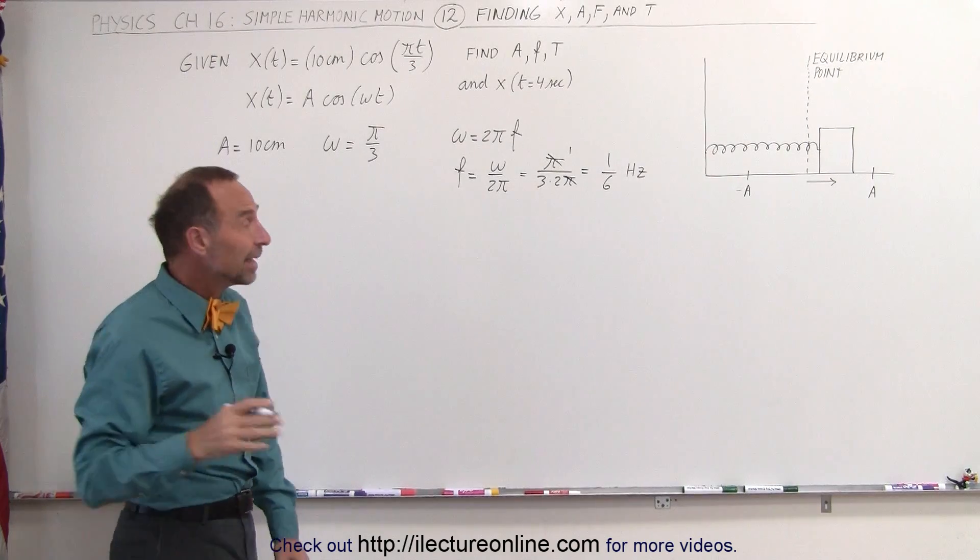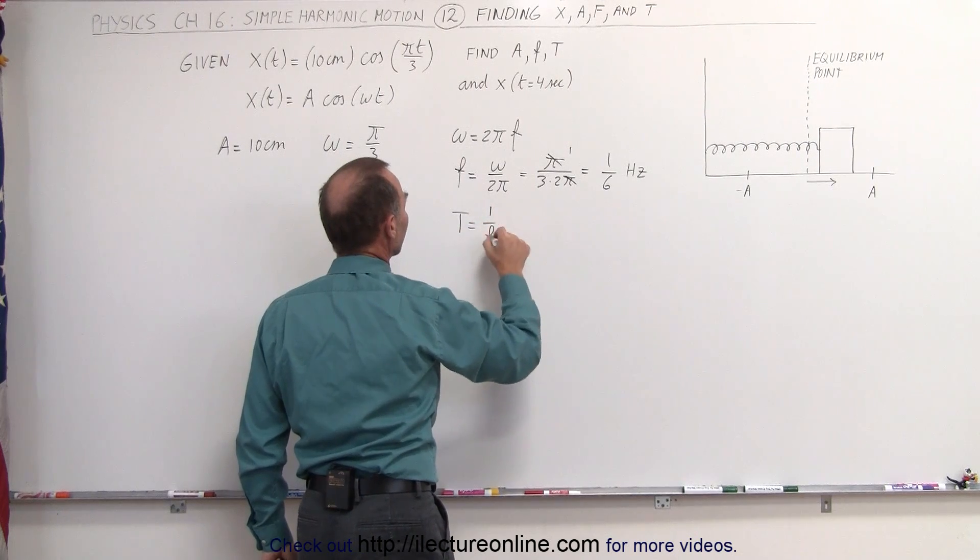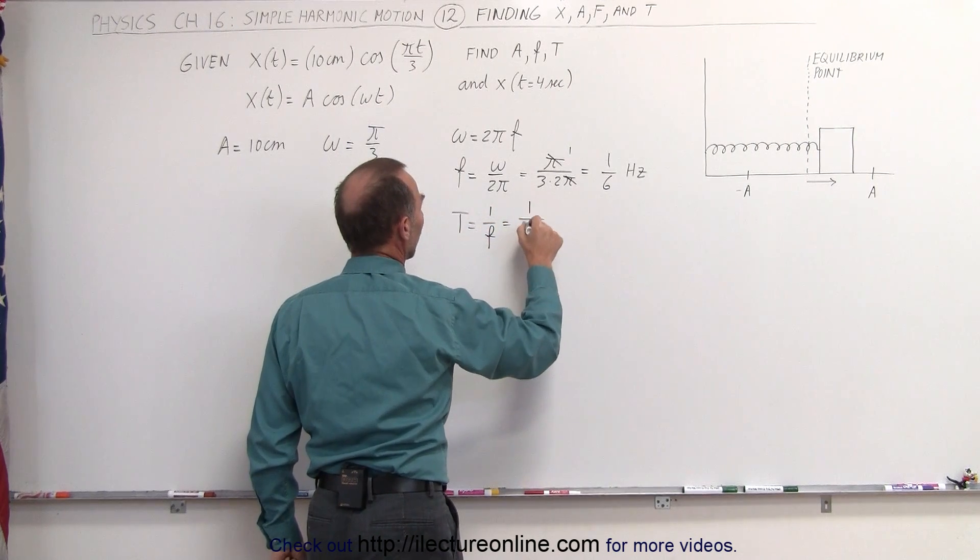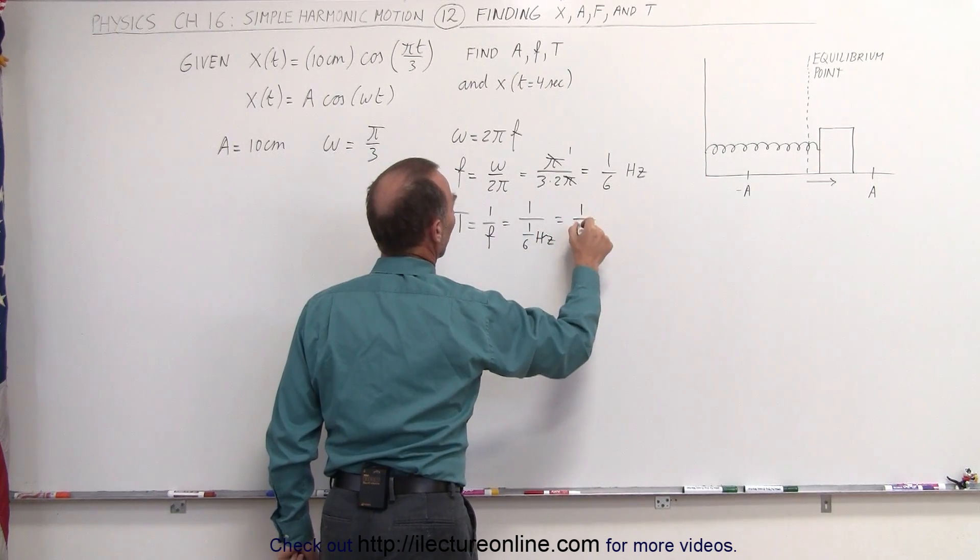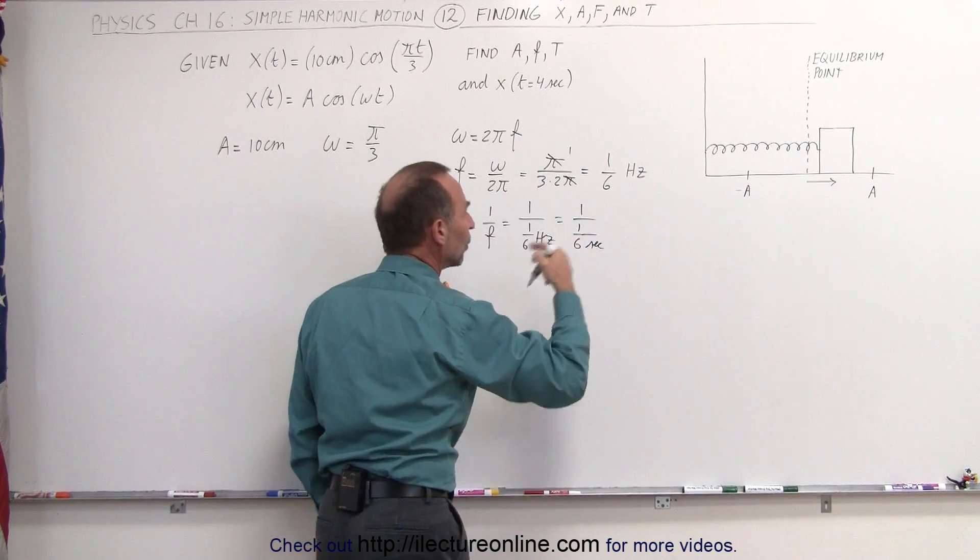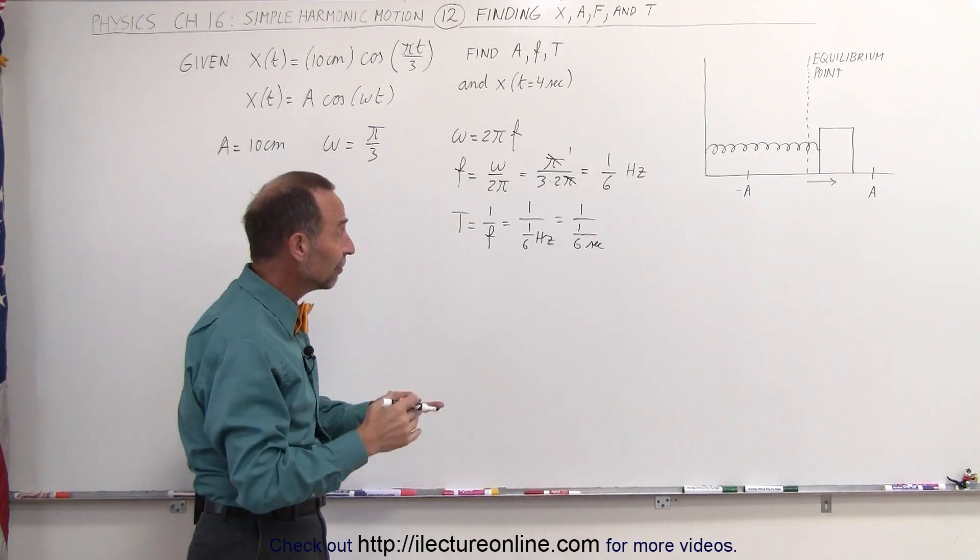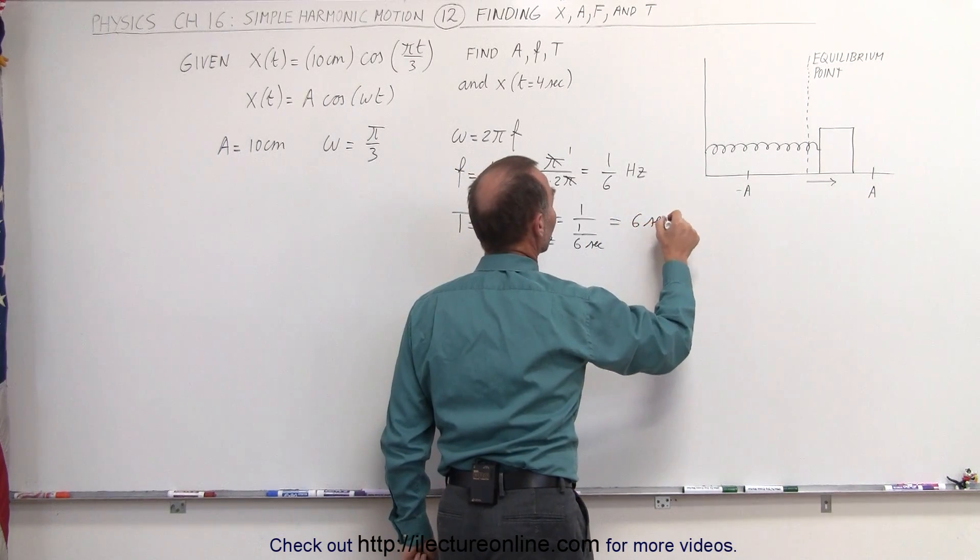The period is the inverse of the frequency. The period is equal to 1 over the frequency, which is equal to 1 divided by 1 over 6 hertz, which is equal to 1 divided by 1 over 6 per second. And when we divide by 1 over 6, that's the same as multiplying times the inverse, this ends up being 6 seconds.